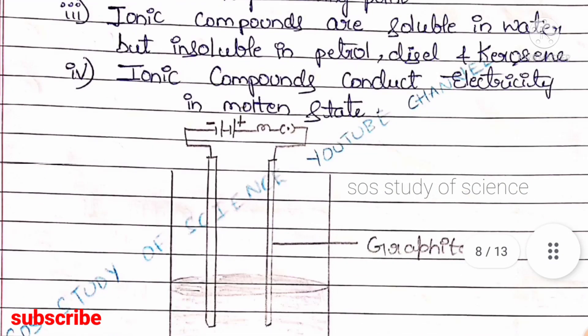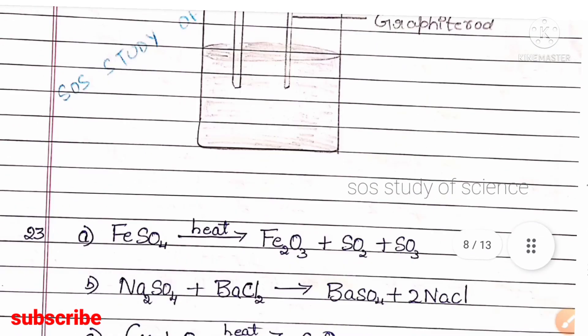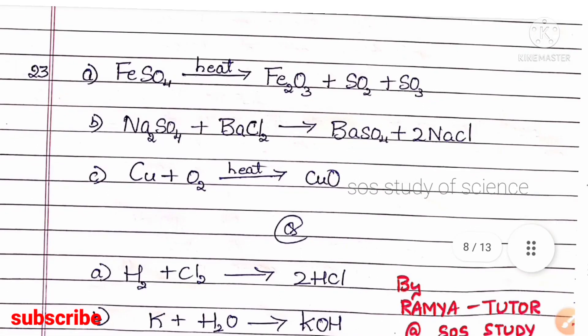Question 22 asks you to draw the arrangement of apparatus used for testing the conductivity of a salt solution and label the graphite rod. You have to draw this diagram and label the graphite rod to get two marks.